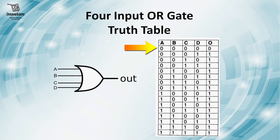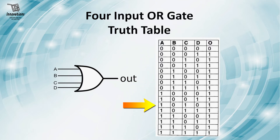You can see only if all four of the inputs are zero the output is zero, and if any or all of the inputs are one the output is one. This is the truth table of the four input OR gate.